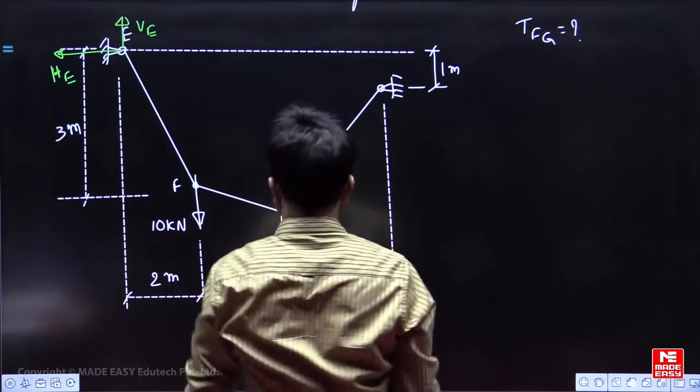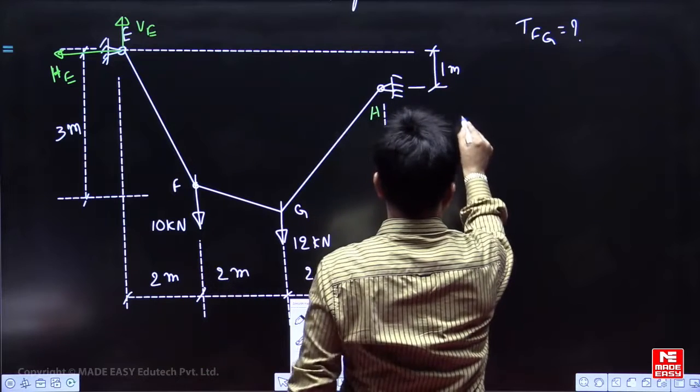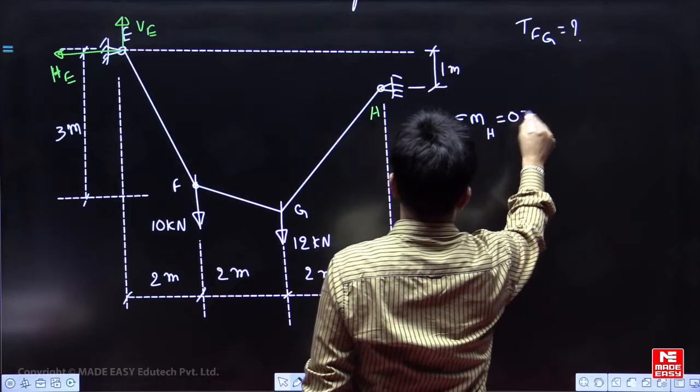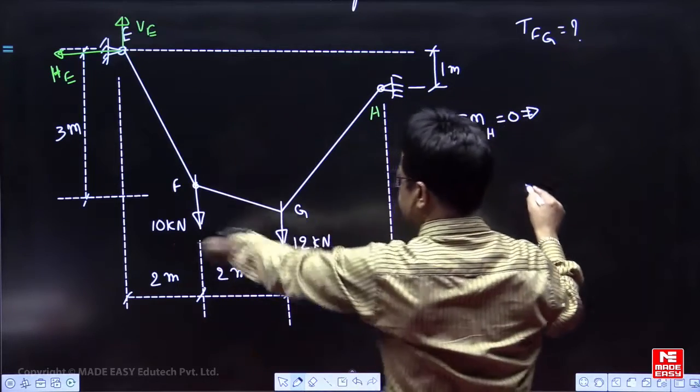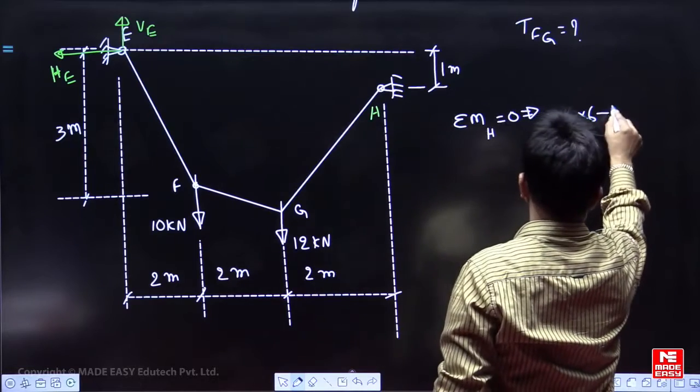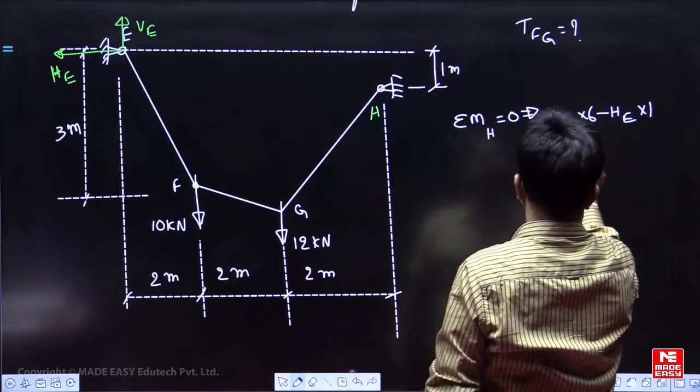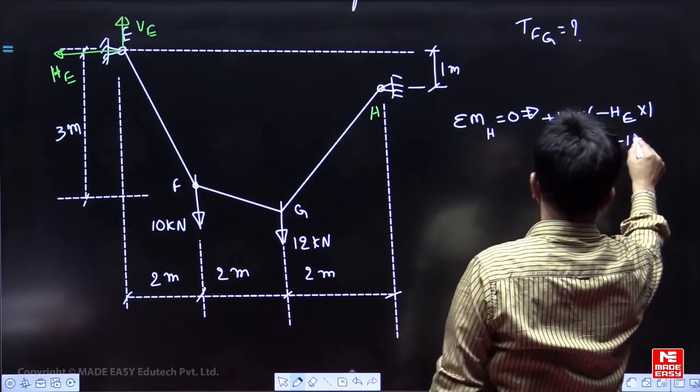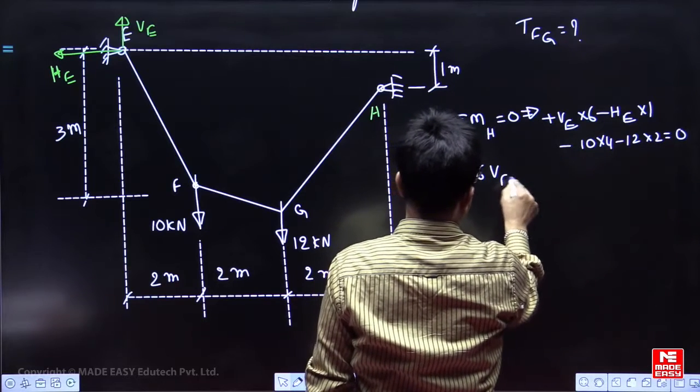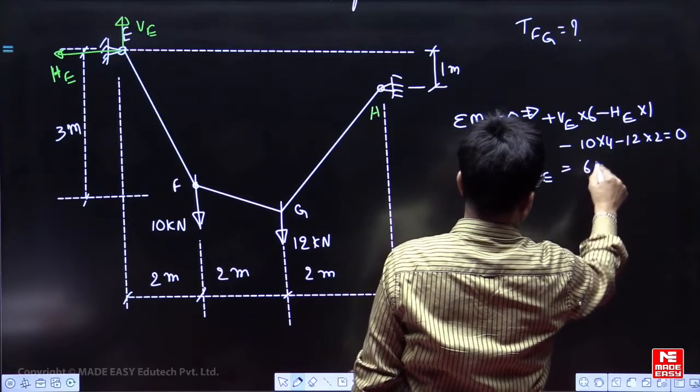If I take moments of all forces about this point, let us say H, take moments of all force about H is equal to 0. Sigma MH equals 0. So, you will get plus VE into 6 plus VE into 6 minus HE into 1 minus 10 into 4 minus 12 into 2 is equal to 0. So, you will get 6VE minus HE is equal to 40 plus 24, 64.